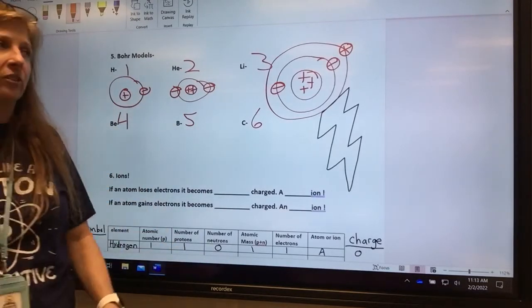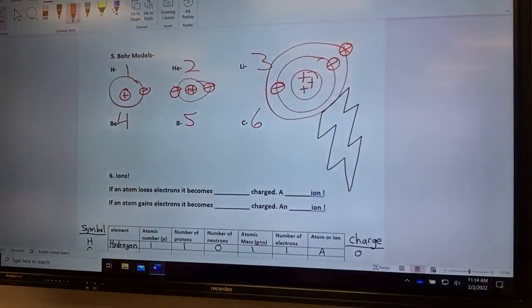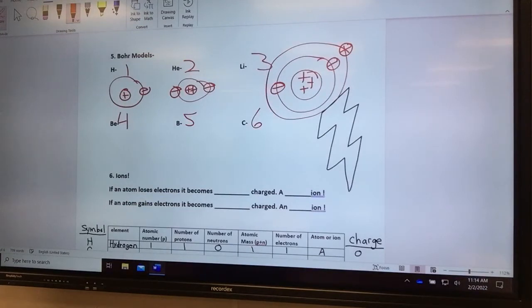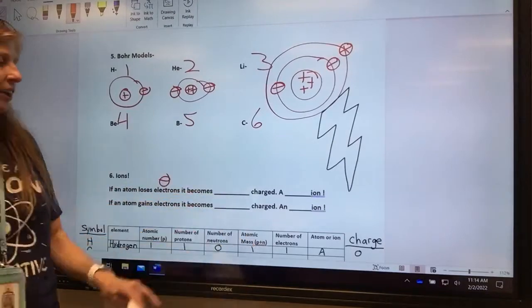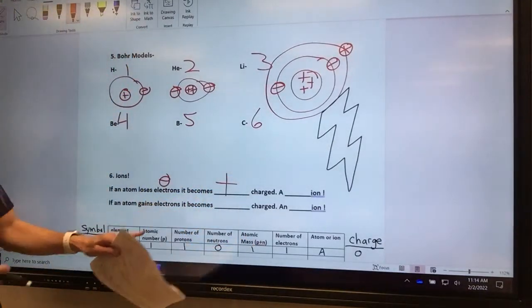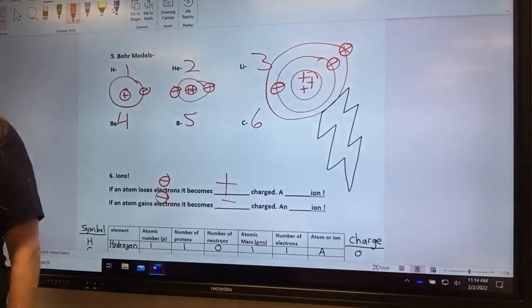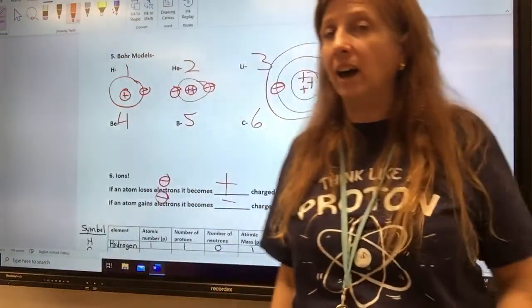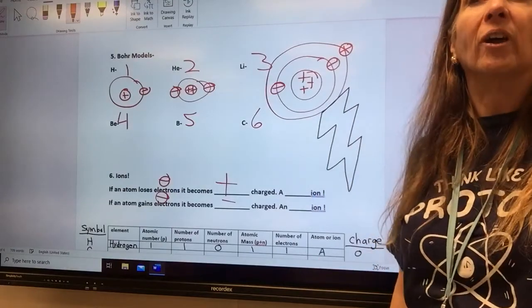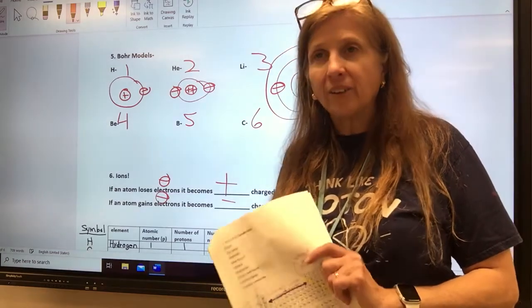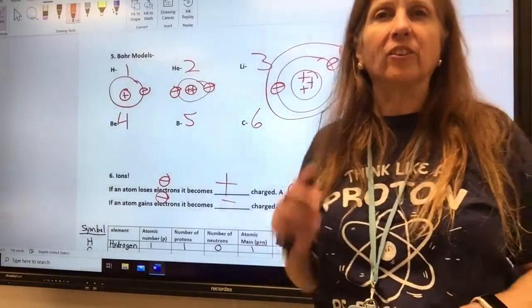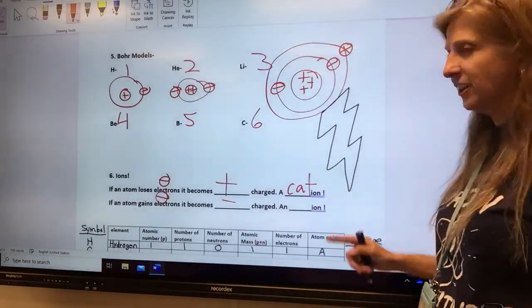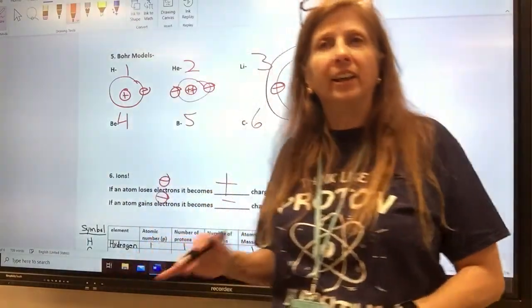Ions. Atoms aren't always neutral like the ones we're drawing on the Bohr model. Electrons can get lost. They can be rubbed off, or they can be captured, and it can get extra electrons. And that gives it a charge. So ions are charged atoms. Electrons are negative. If an atom loses an electron, it becomes positively charged. If an atom gains an electron, it becomes negatively charged. There's a special name for positive and negative ions that is easy to remember if you just remember that cats are great.